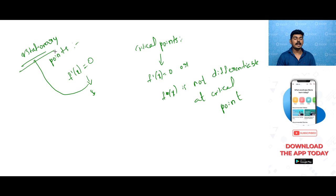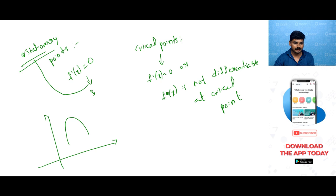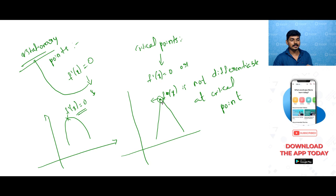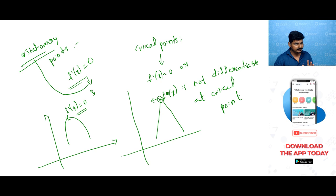Stationary points are the points where f'(x) is equal to zero. Critical points are the points where f'(x) is equal to zero or where f(x) is not differentiable. For example, you can have a graph point where f'(x) = 0 — that is a stationary point as well as a critical point. But if at a particular point f(x) is not differentiable, that point is called a critical point, not a stationary point.